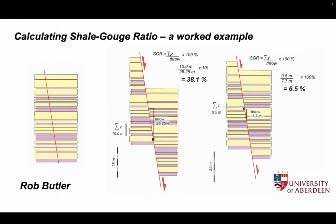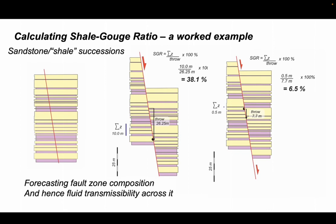The shale gouge ratio is a parameter that estimates the composition of fault rocks in sedimentary basins. It was developed for sandstone-shale successions and is now widely used to estimate fluid transmissibility of fault zones in these successions in sedimentary basins. In this short video I'm going to go through how we calculate the shale gouge ratio.